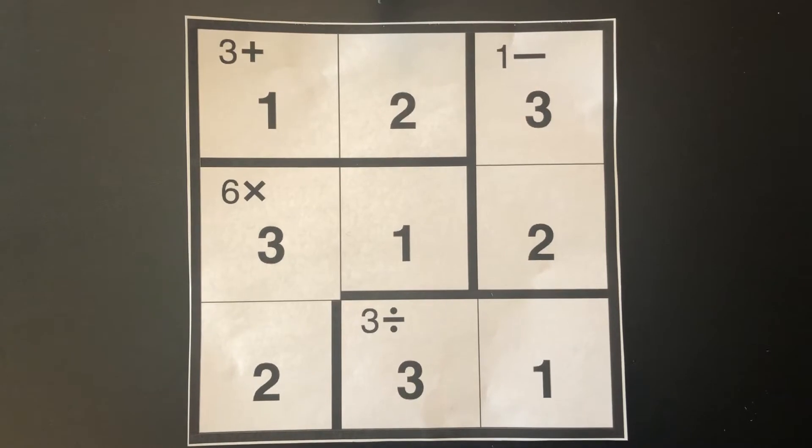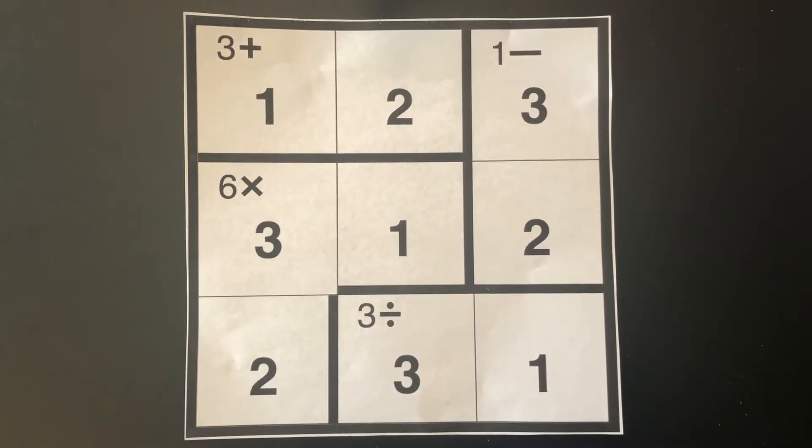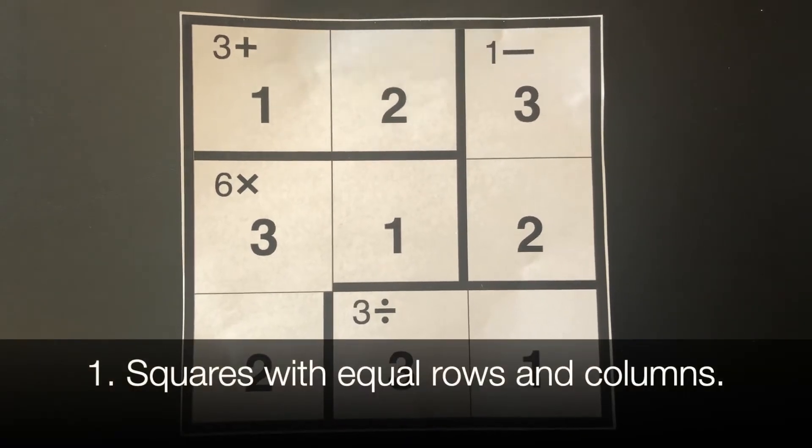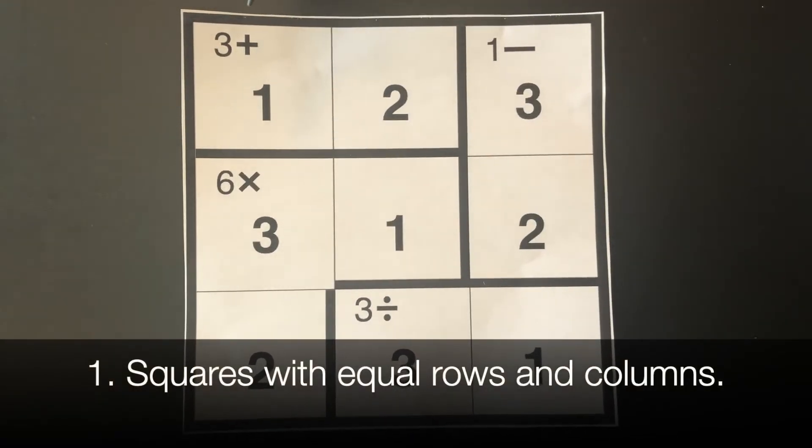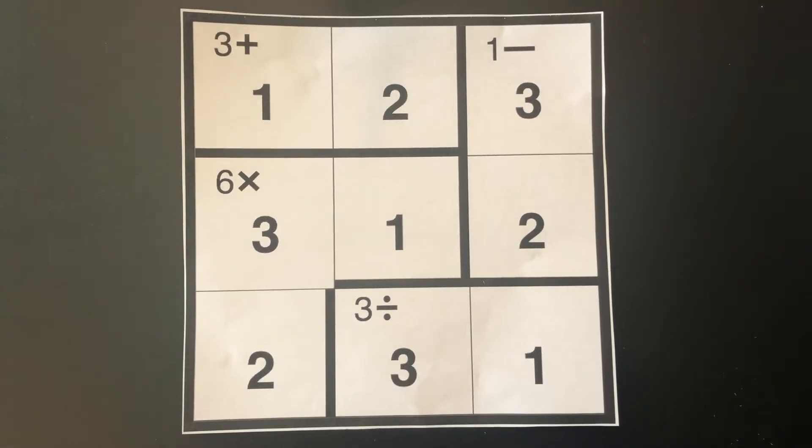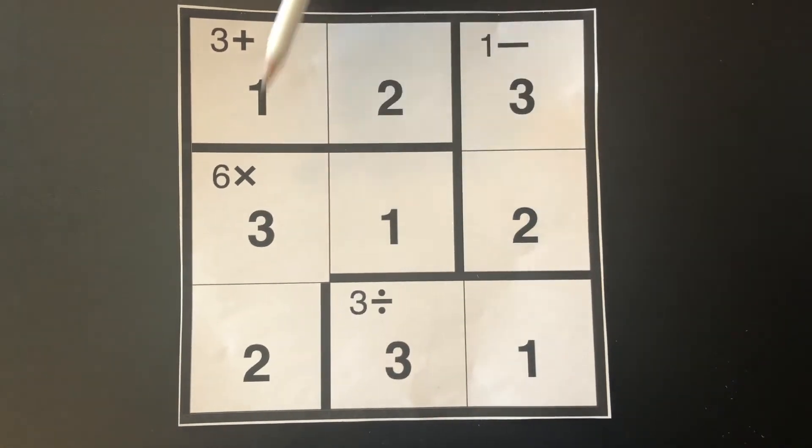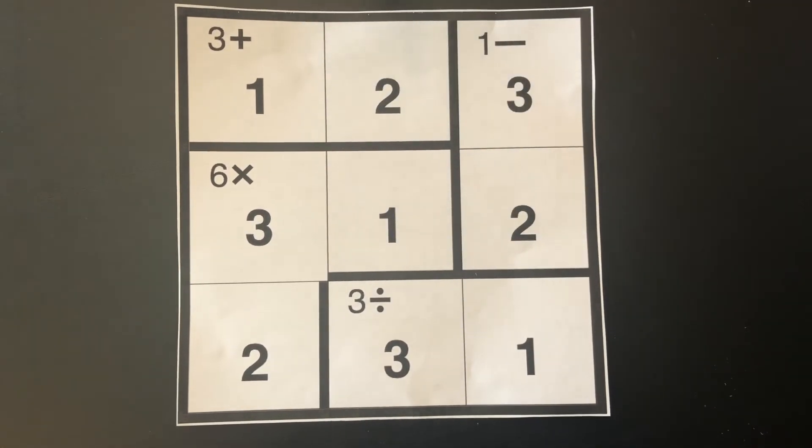Now let's go over the four basic rules for solving KenKens. Number one, all KenKens are squares with an equal number of rows and columns, like a three by three puzzle with three rows and three columns of three boxes.